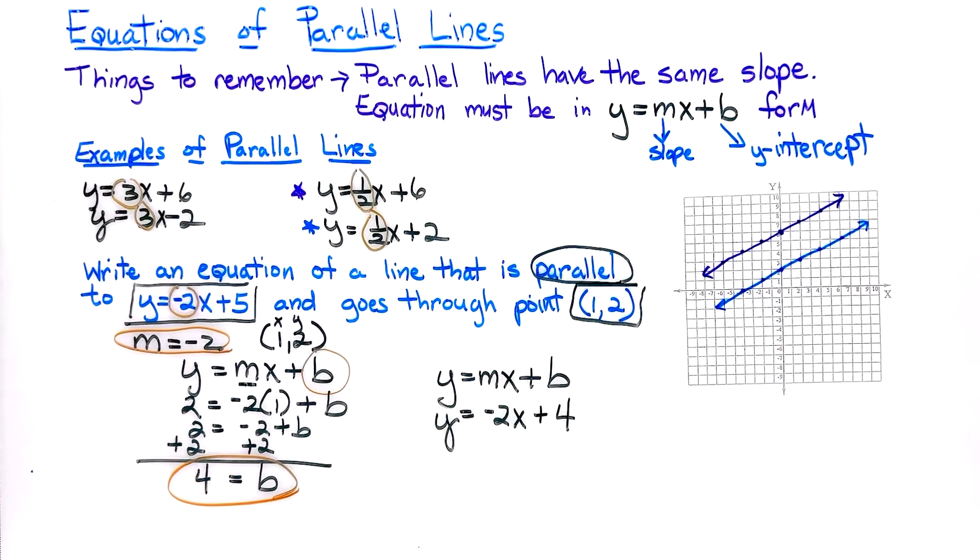So the two lines that are parallel to each other are y is equal to a negative 2x plus 5, that was given, and the answer that we found, y is equal to a negative 2x plus 4. Again, the slopes are the same, the y-intercepts are different. This is the answer to the problem that was given to us.